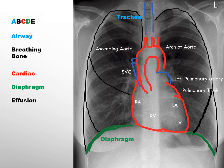A is for airway. When evaluating the airway, it is important to determine whether the trachea is centrally positioned or deviated. B stands for breathing, and it can be evaluated by observing the lung hilum for lymph nodes, bronchovascular markings for any irregularities, the lung field for signs of consolidation, and the presence of pneumothorax.